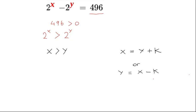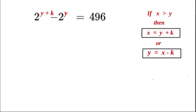We're going to reuse this and input it into the original equation. So now we have 2 to the power of y plus k, replacing x, and also 2 to the power of y, which is the original, is equal to 496. Very good.